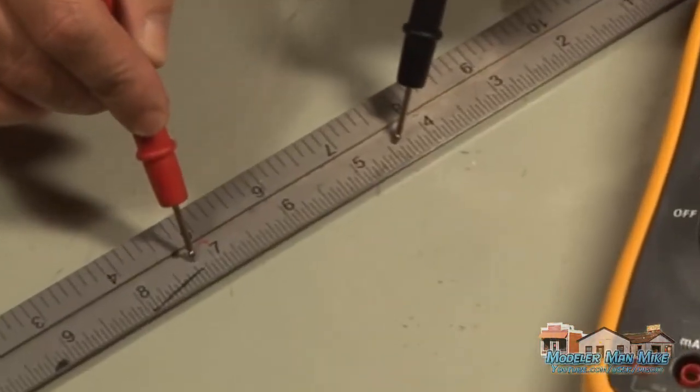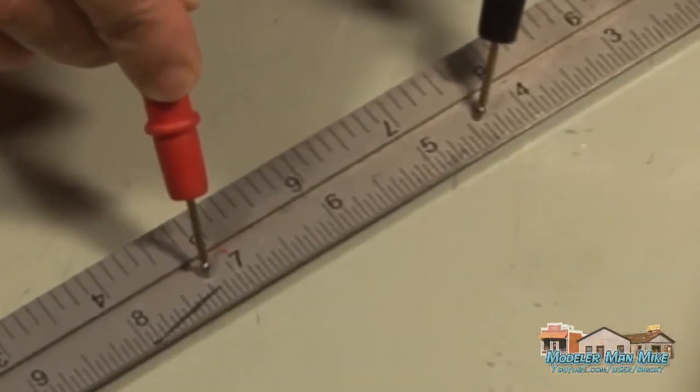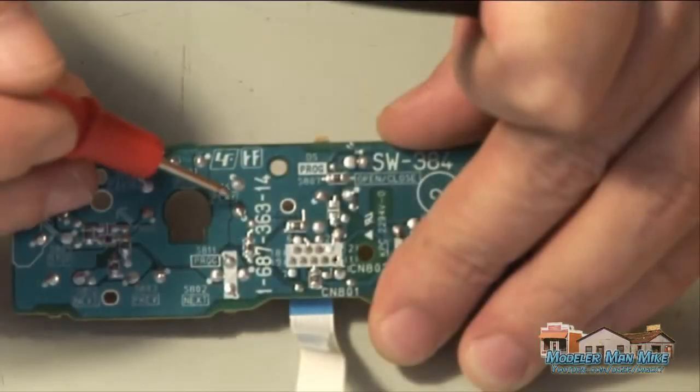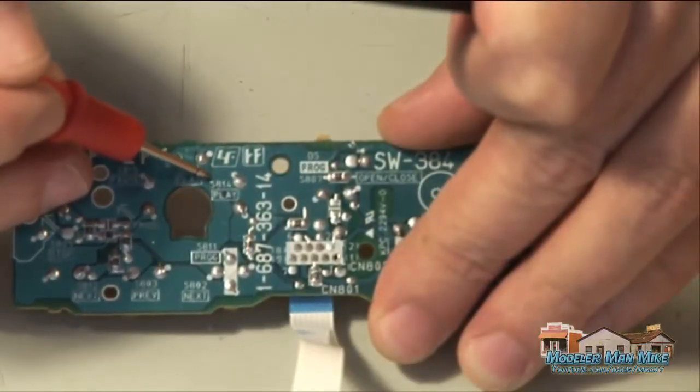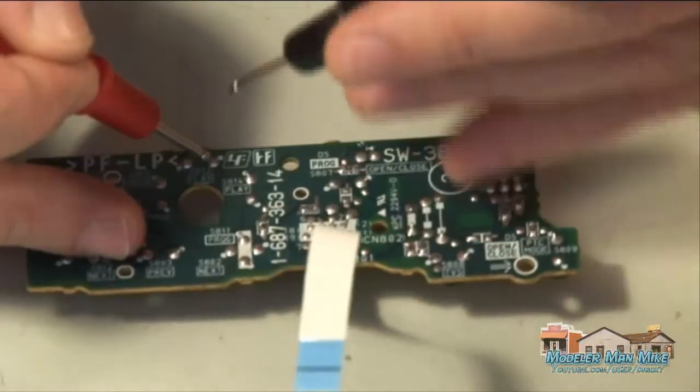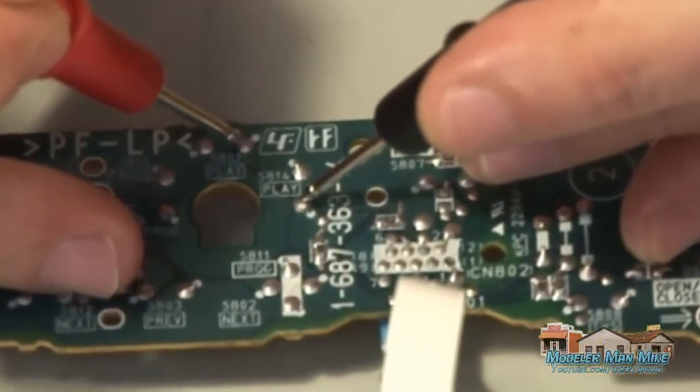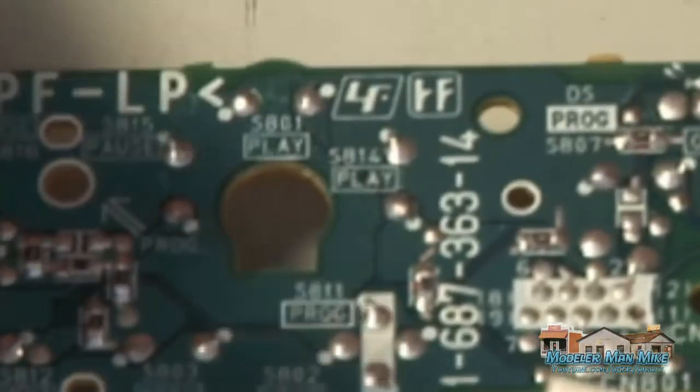Even my ruler. And so all these things conduct. You can see here I've got a trace here. If I want to test a trace on a circuit board I can simply drop down, put my probes on there and test it out.